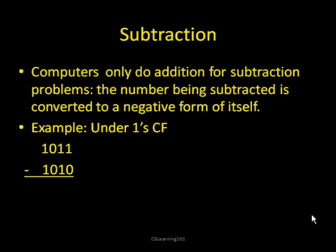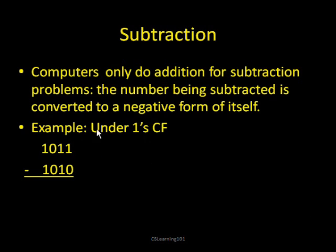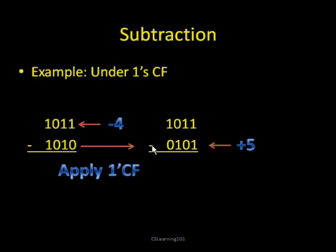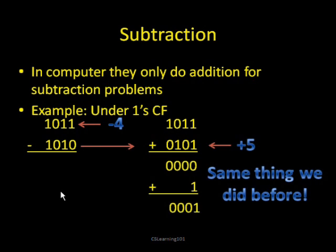Now we're going to do subtraction. Computers don't actually subtract — they only do addition. To do a subtraction, they add the negative version of the second number. For example, under 1's complement, we have 1011 subtract 1010. What we do is take the second number and apply the 1's complement to it — we could also do 2's complement depending on the question. Now we're actually adding the opposite of the second number. We have that extra bit again, so since we're doing 1's complement, we add 1 to the end and that's our answer.